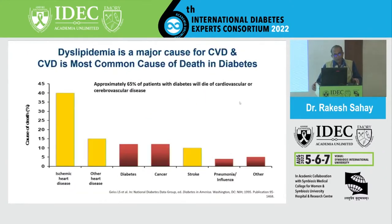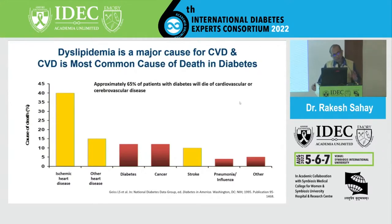If we look at the major causes of death in people with diabetes, we see that ischemic heart disease remains the most important cause, contributing to almost 50 to 75 percent according to different studies. That remains the major cause for morbidity and mortality in patients with diabetes.